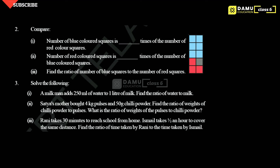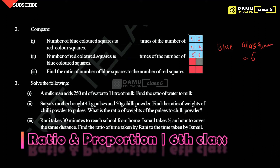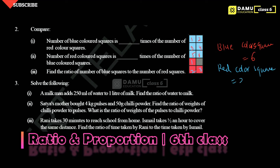Next question: compare — number of blue colored squares is dash times the number of red colored squares. Blue colored squares: 1, 2, 3, 4, 5, 6 — so blue equals 6. Red colored squares: 1, 2, 3 — so 3 red colored squares. Number of blue colored squares is 2 times the number of red colored squares, since 3 into 2 equals 6.